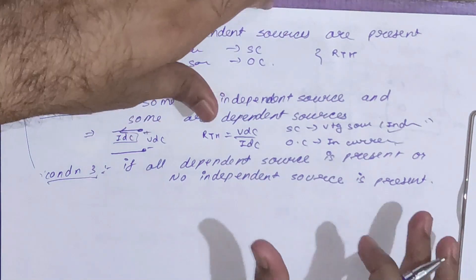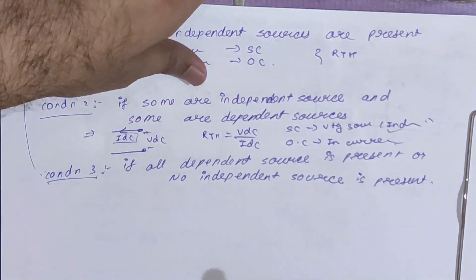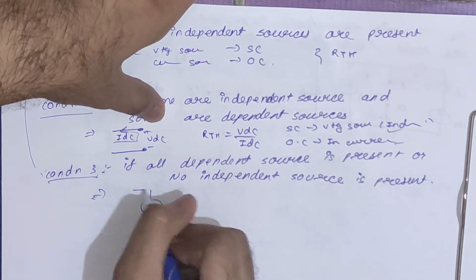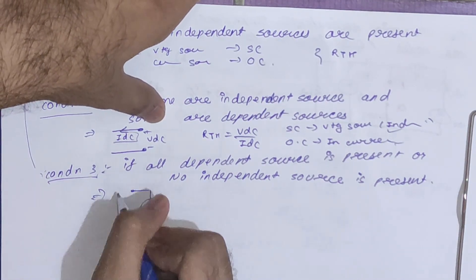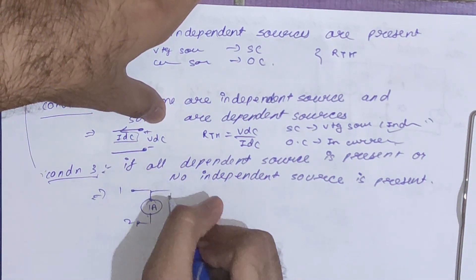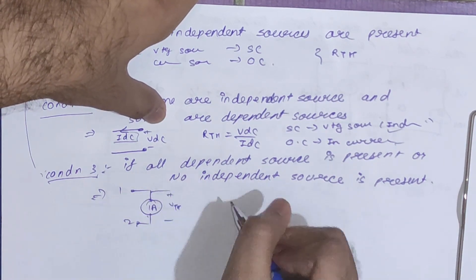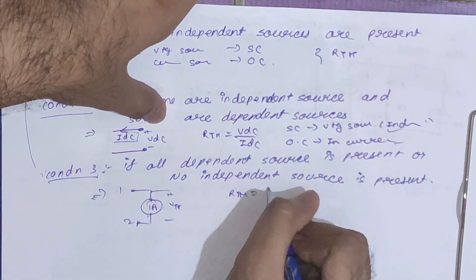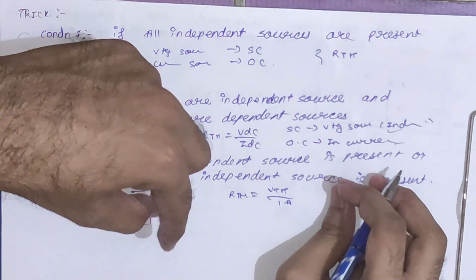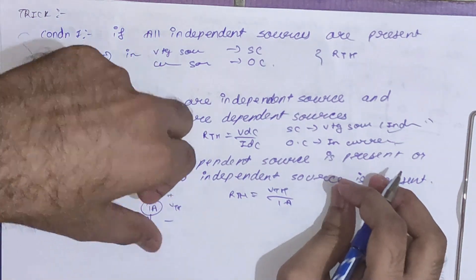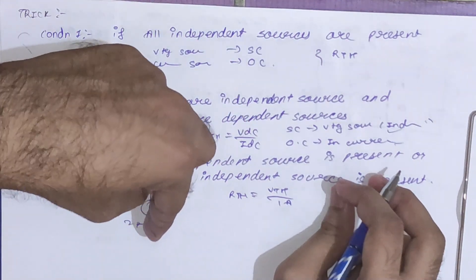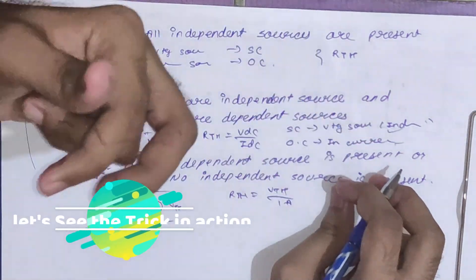Condition 3 is where you find only dependent sources and no independent source. At that time, assume 1 ampere current flowing through your two points and calculate Vth across those points. Your Rth will simply be Vth divided by 1 ampere. You can also assume 1 volt between the terminals, but the 1 ampere method is easier.